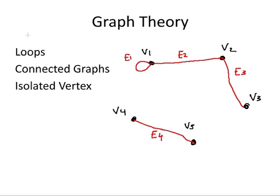A loop describes an edge that starts and ends with the same vertex. For example we have a loop here. E1 connects v1 back to v1. So we describe that as a loop.